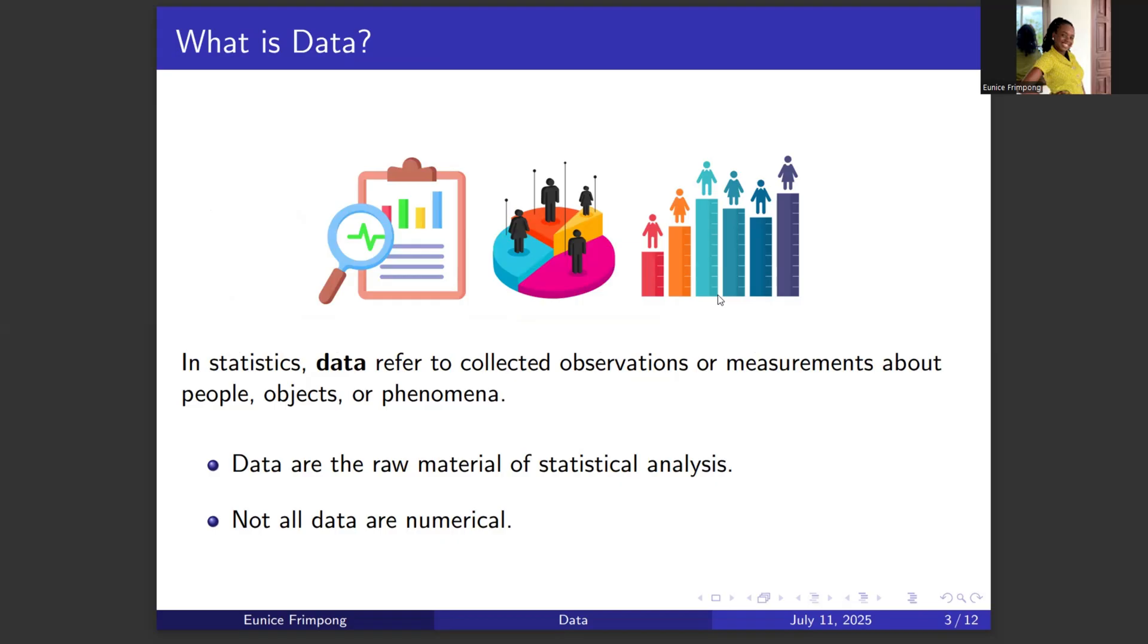So what is data? In statistics, data refers to collected observations or measurements about people, objects, or some phenomena. If you look at this chart here, this is some information about some people. This code represents the height of these individuals or their ages. If this is representing the ages of these individuals, then this individual is the oldest, and this individual in red is the youngest.